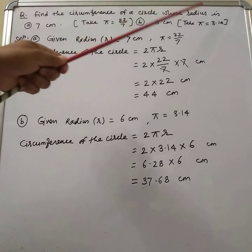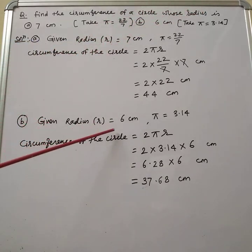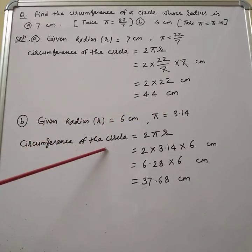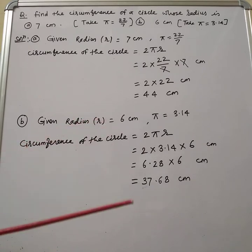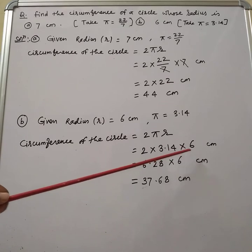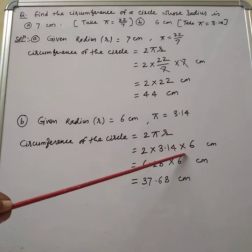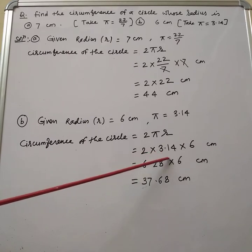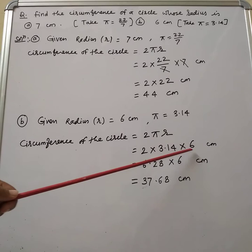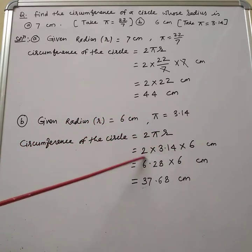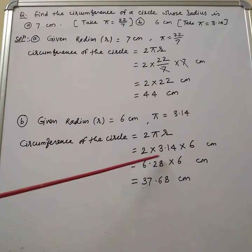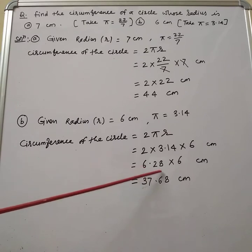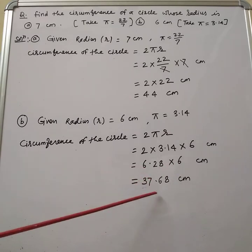For the second example: find the circumference of a circle whose radius is 6 cm. Here, the radius is 6 cm and the value of pi is 3.14. The circumference of the circle equals 2 pi r. Substituting: 2 into 3.14 into 6. We can multiply in any order. First, 2 into 3.14 gives 6.28. Then multiplying 6.28 by 6, we get 37.68 cm.